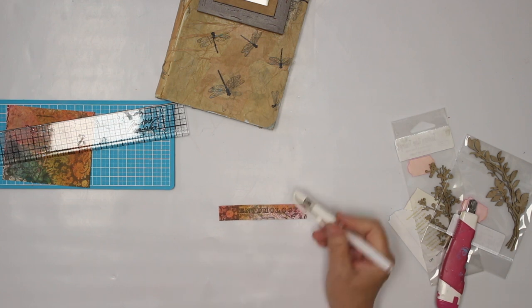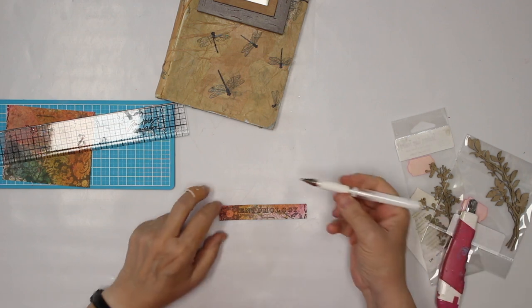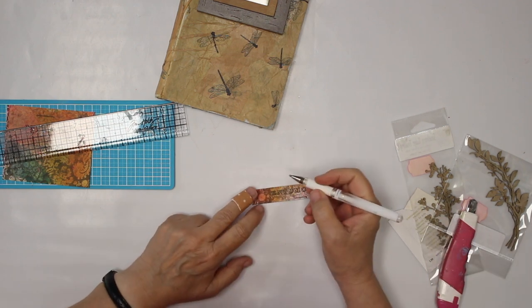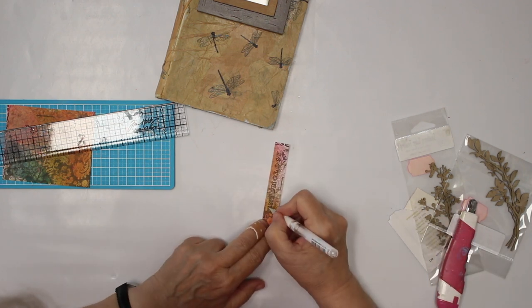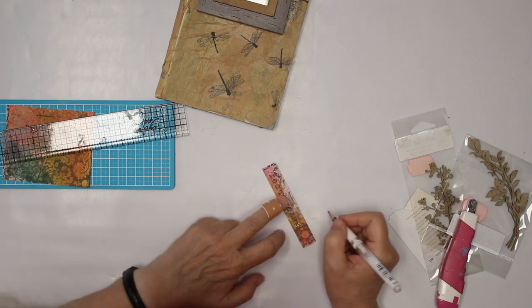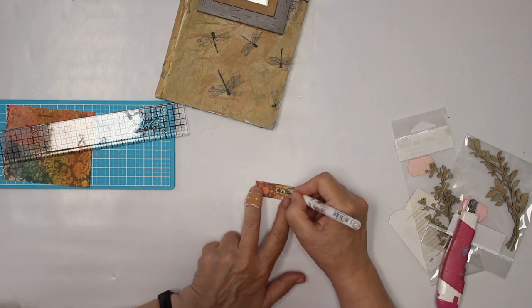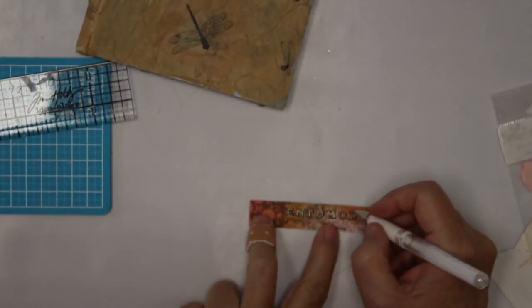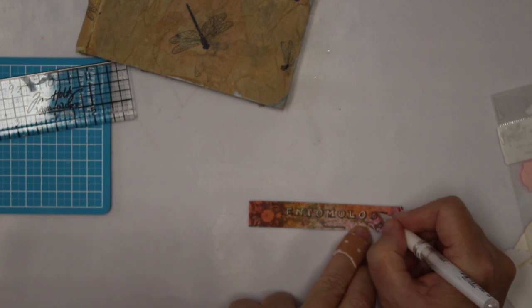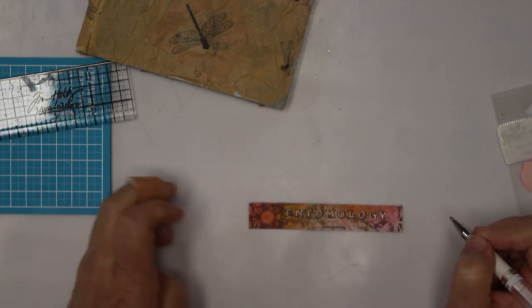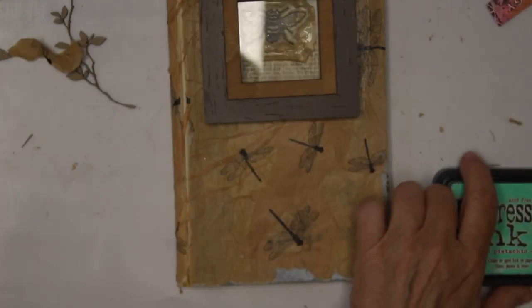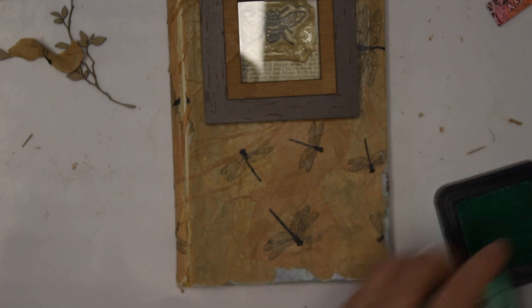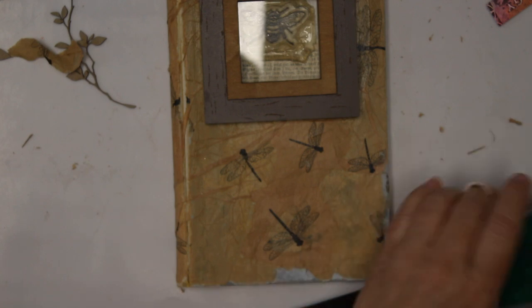So I'm going to cut that back. And to make it pop a little bit more, I'm going to use the Uni Signo white pen. And I think I'm going to use some distressing also.